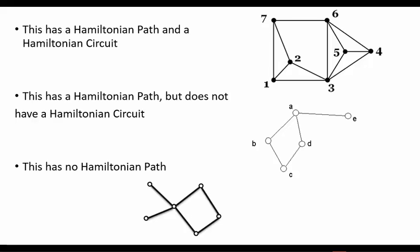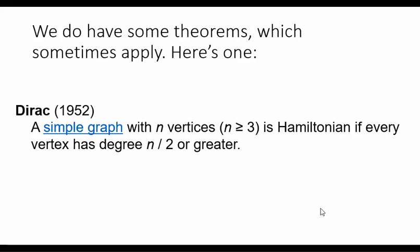We do have one theorem that says a simple graph with n vertices, where n is greater than or equal to 3, is Hamiltonian — there will be a Hamiltonian path if every vertex has degree n over 2 or greater. This was proven in 1952, and it's a pretty strong condition because it just means you've got lots of edges from every vertex, so you have lots of choices.